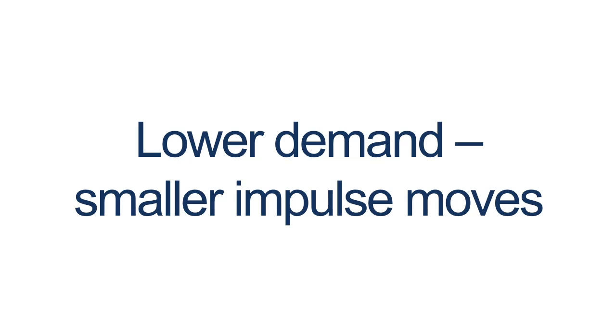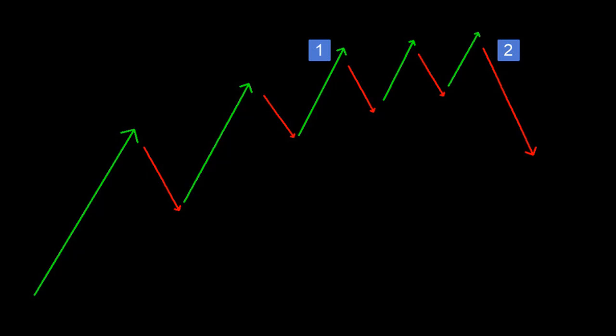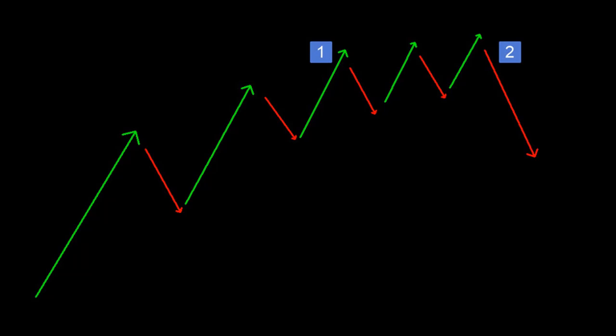We may start to see the corrections begin to increase in size. There's going to come a time when the buyers are done and supply enters the market. When this occurs, we will start to see the correction larger in scope than the impulse moves. This graphic here shows a typical uptrend in action — large thrusting impulse moves with smaller corrections. At number one, we see that the demand for this instrument is beginning to stall, although the corrections are not yet showing an increase in supply. When the last push upwards occurs, supply enters the market.